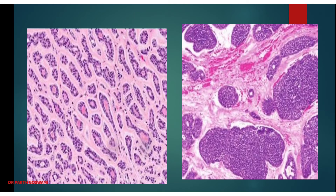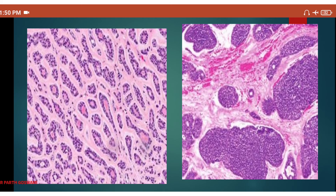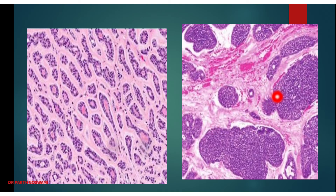When the cribriform pattern is not predominant and glandular or solid patterns are seen, the tumor is higher grade. Grade 1 shows only cribriform pattern; grade 2 shows both cribriform and glandular patterns equally; grade 3 shows only solid pattern with basaloid cells in solid nesting. Grade 3 is high grade with very poor prognosis.